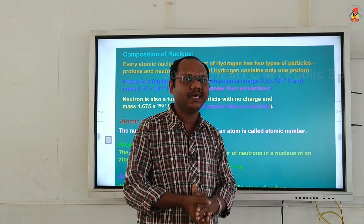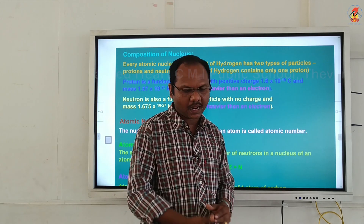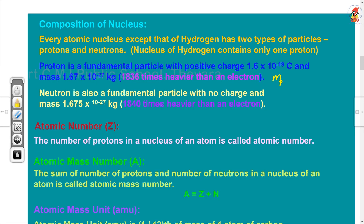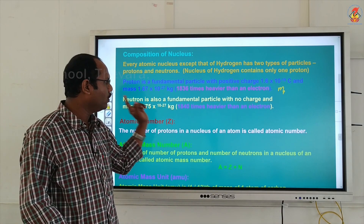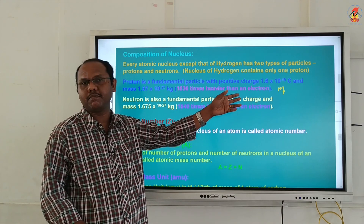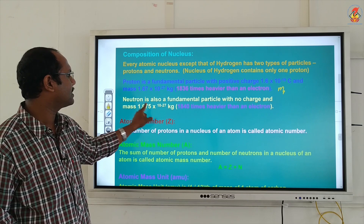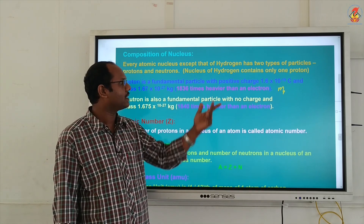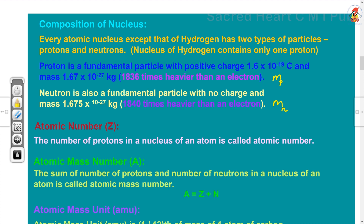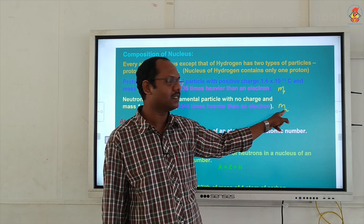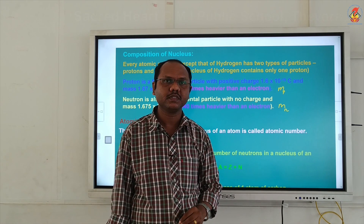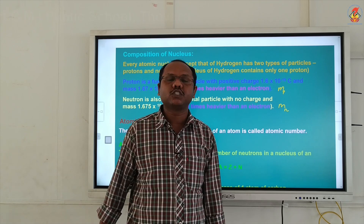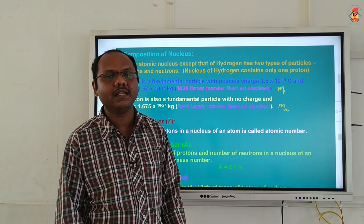Charge is denoted by small letter e, and mass of proton is written as m subscript p. Similarly, for the neutron — the neutron is also a fundamental particle; it has no charge and its mass is 1.675 × 10⁻²⁷ kg, written as m subscript n. This is slightly greater than the mass of the proton. So proton and neutron have almost the same mass, but the mass of the neutron is slightly greater.